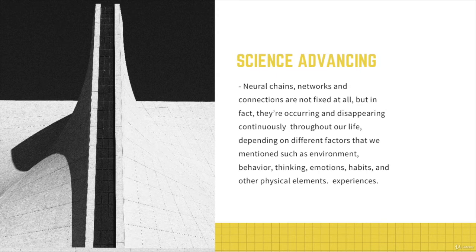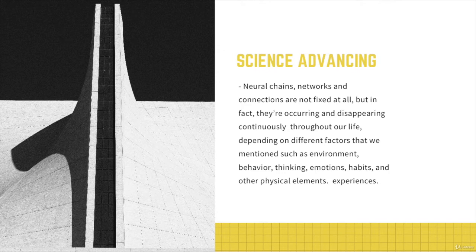The cell body usually contains the DNA and other structures to build protein and make energy. The axon is a cable-like projection along the length of the cell, usually covered with a thin layer of myelin sheath, which makes it approximately like an insulated electrical wire. The dendrites are small branch-like projections of the cell that ensure connection to other cells, allowing electrical signals to go through from one cell to the other.